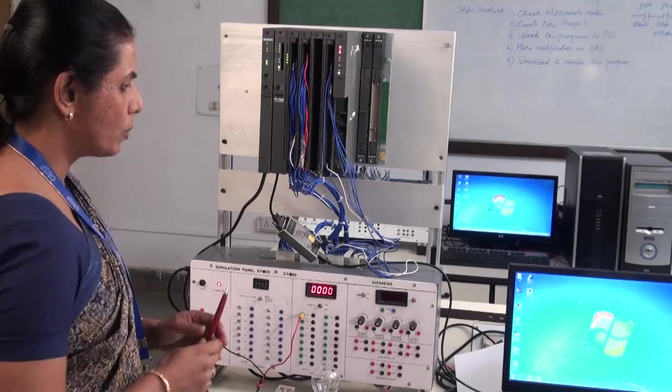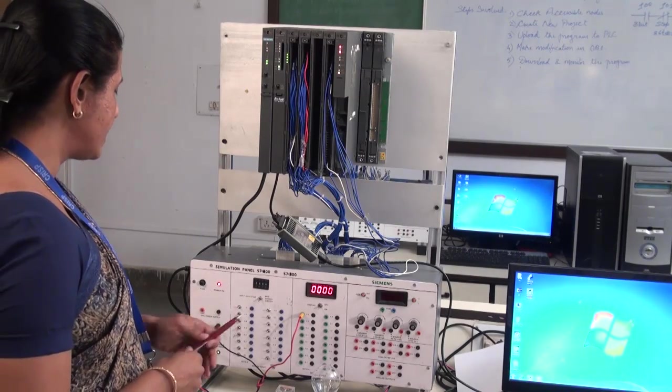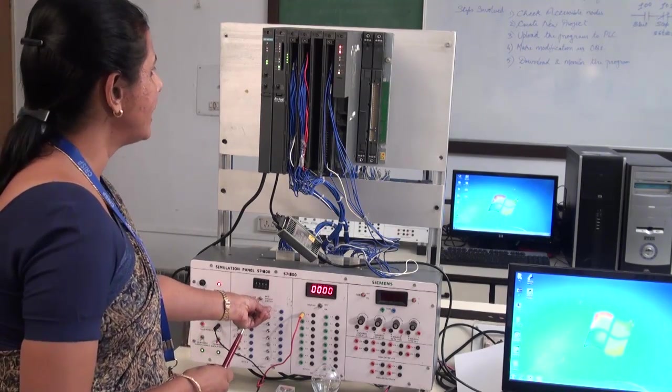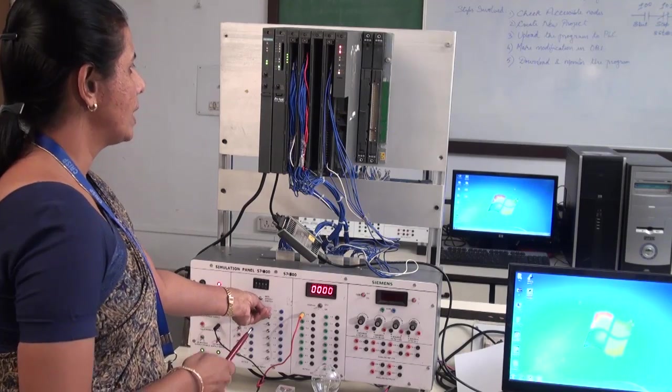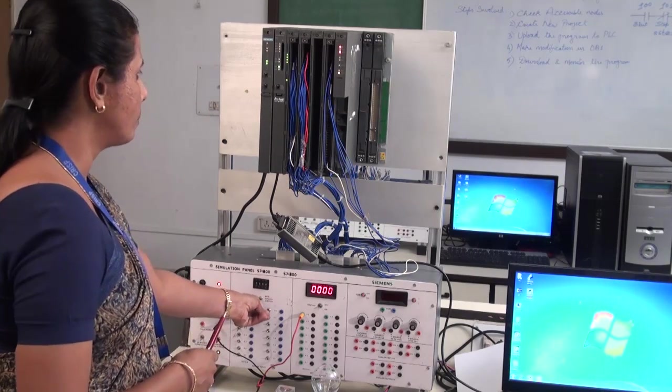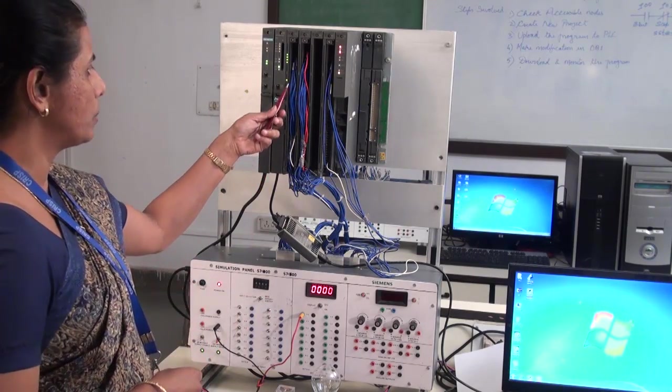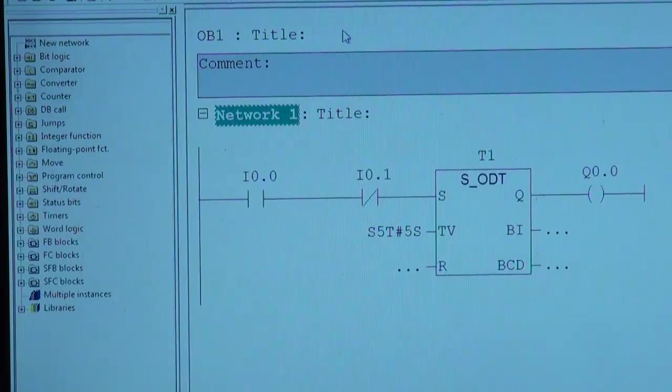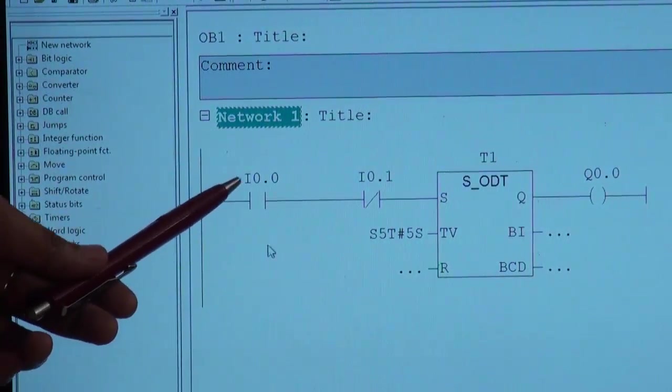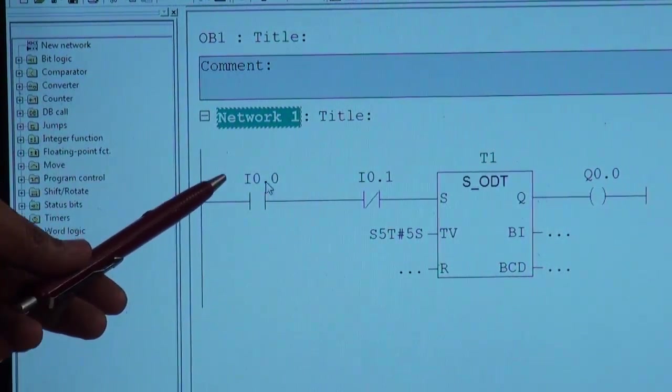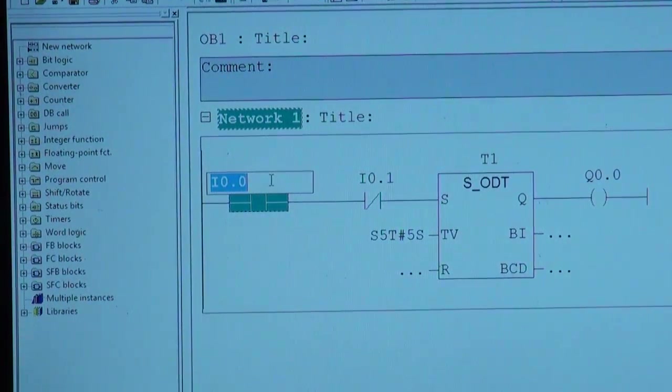Now what we are going to do is replace the address I0.0 with I1.0. Here you can see this switch is working properly and the status is also coming to our digital input card. Now we will modify this address I0.0, this will be modified to I1.0.